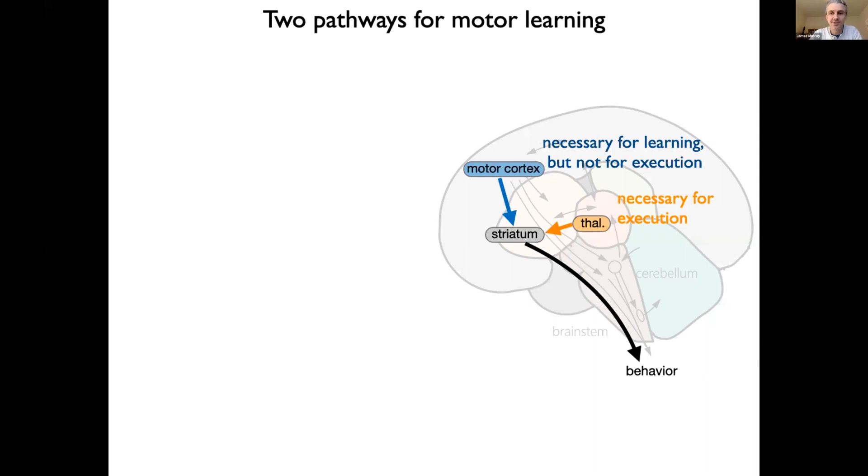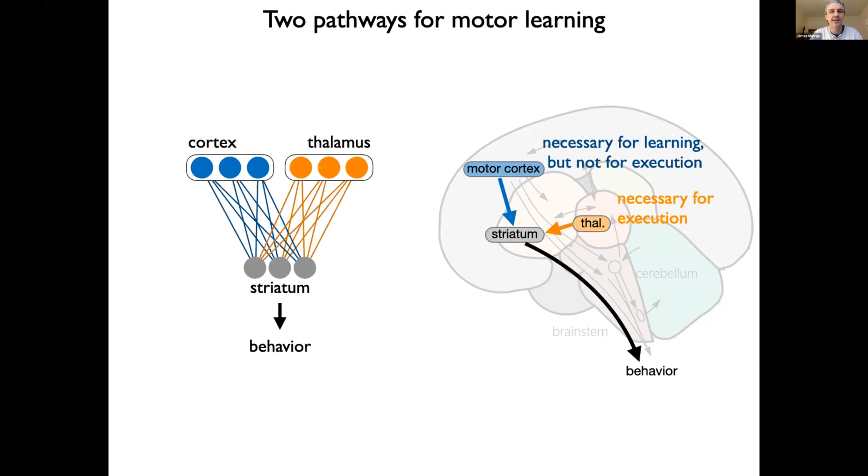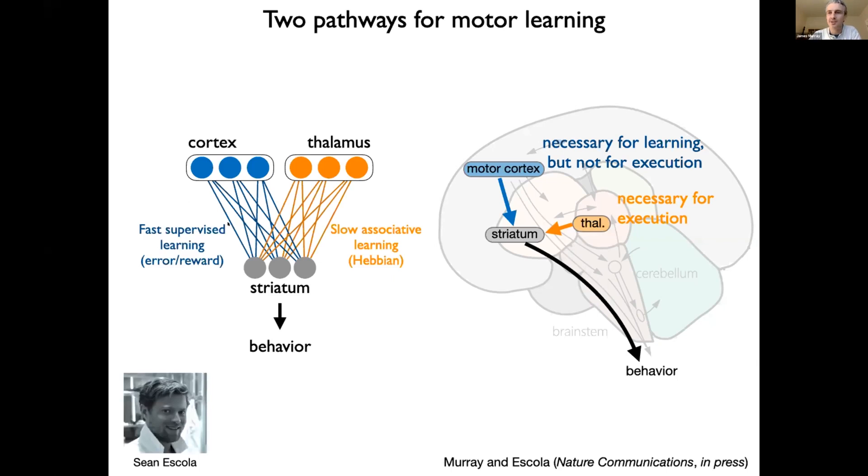And so as theorists, our job was to come up with a model that would explain this result. And so our model has a bunch of neurons in each of these three areas with downward projections along these two pathways, and we think of the output of striatum as determining the behavior. And the model that we developed invokes different forms of synaptic plasticity in these two pathways in order to explain this asymmetry in results between the cortical and the thalamic pathways. Namely, we have supervised learning in the first pathway, supervised meaning that its job is to minimize errors or to maximize rewards. And then we have associative learning or Hebbian learning in the second pathway. And this is blind to information about errors and rewards. Its job is just to reinforce associations between the input and the output neural activities. So this is work that was done together with Shauna Scola at Columbia University.